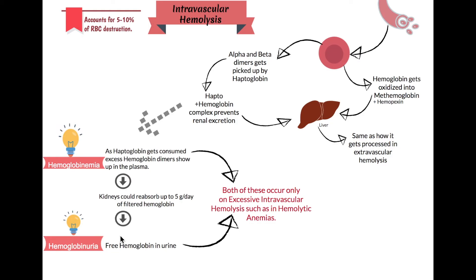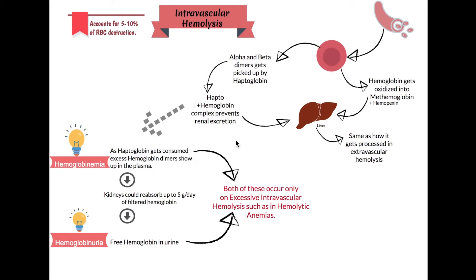Both hemoglobinemia — when hemoglobin shows up in your plasma — and hemoglobinuria — when hemoglobin shows up in your urine — only happen when there is so much intravascular hemolysis occurring. This only happens in conditions like hemolytic anemias, when your RBCs are bursting in your vessels. Usually, intravascular hemolysis is limited to the haptoglobin step and doesn't progress to hemoglobinemia or hemoglobinuria.